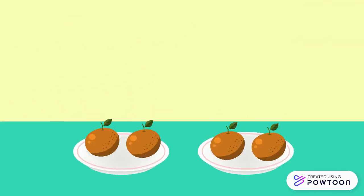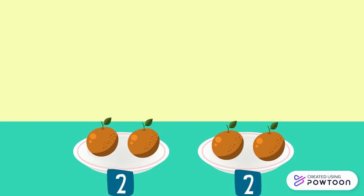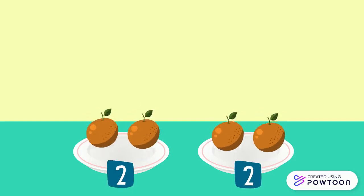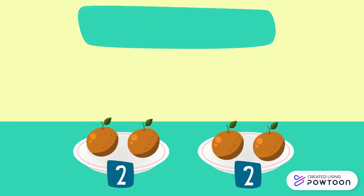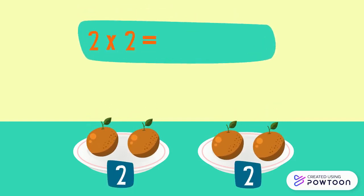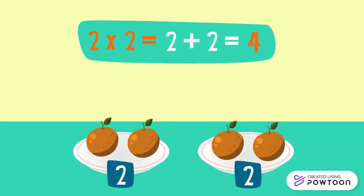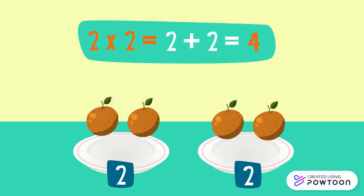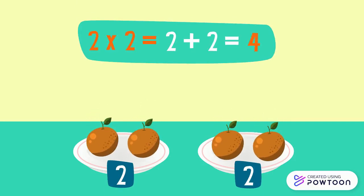There are two plates. In each plate there are two oranges. So the total number of oranges is 2 times 2 equals 2 plus 2 equals 4. So 2 times 2 equals 4.